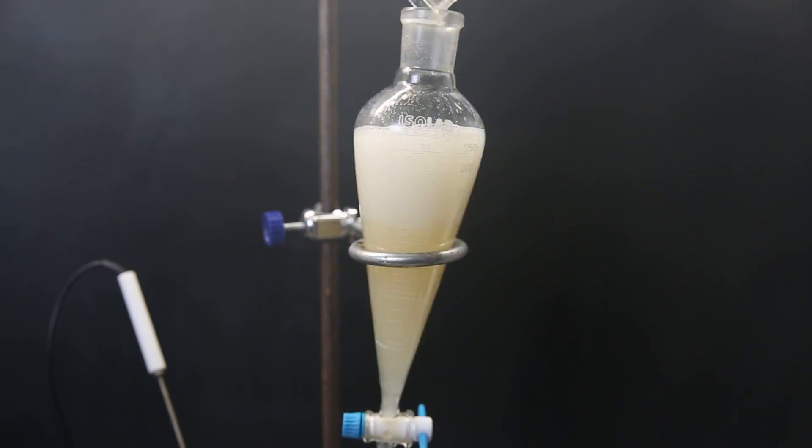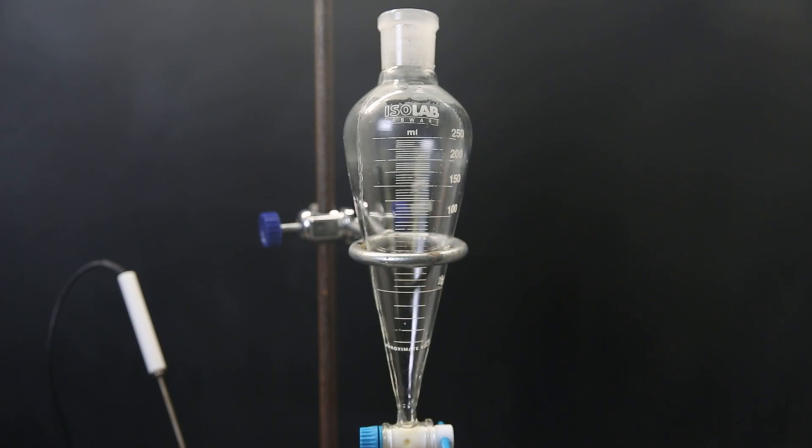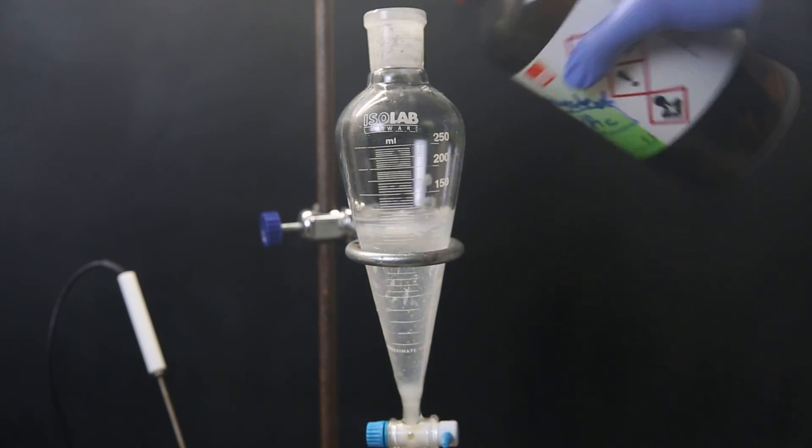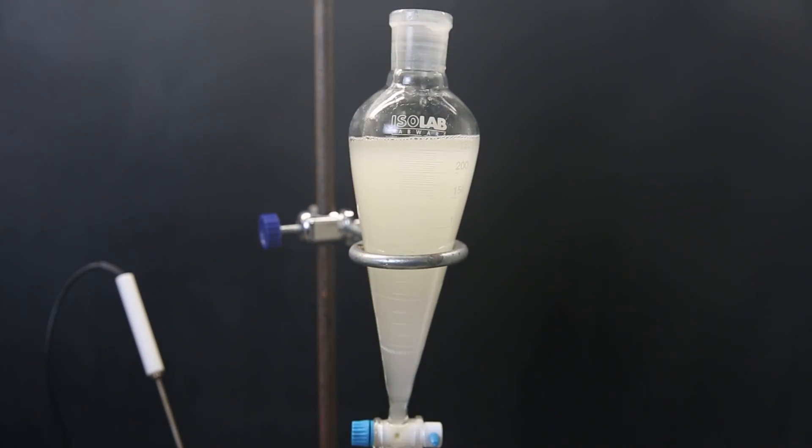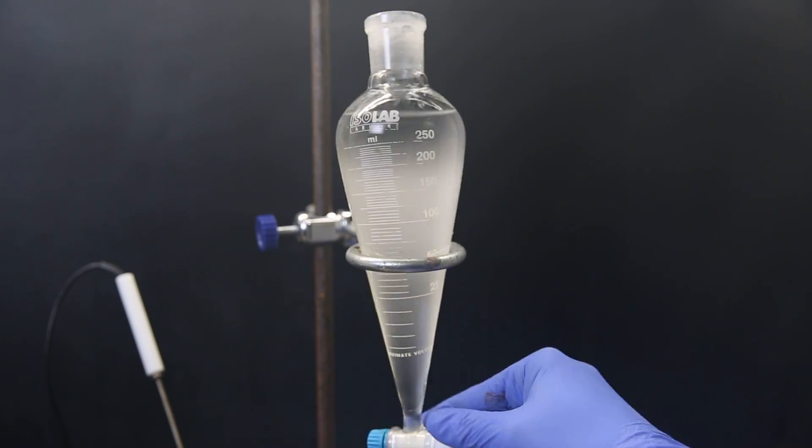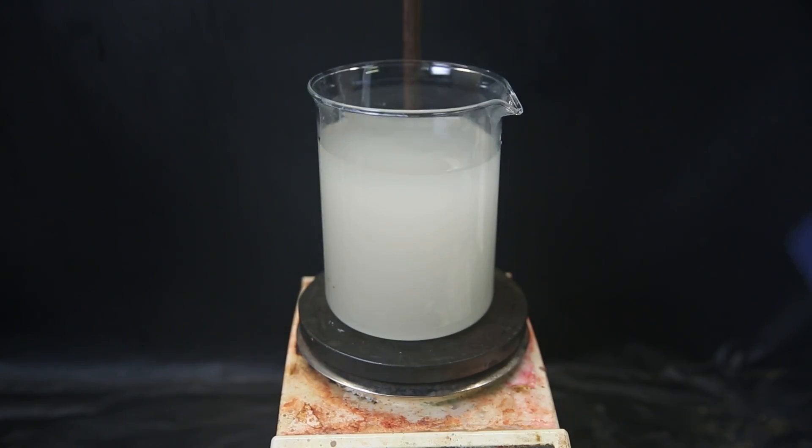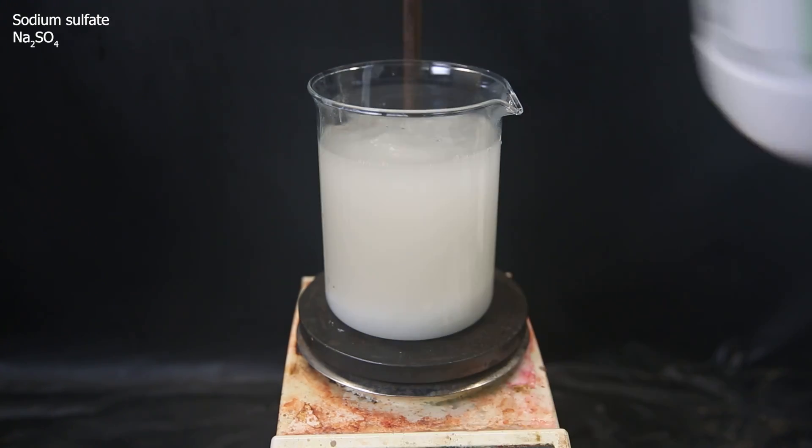I then separate the layers and extract the water layer several times with ethyl acetate instead of dichloromethane, since it seems to have better solubility. The combined dichloromethane and ethyl acetate extracts are a cloudy mixture. To remove remaining droplets of water, I add some anhydrous sodium sulfate, which will absorb them.